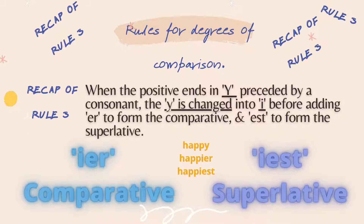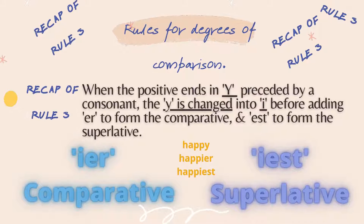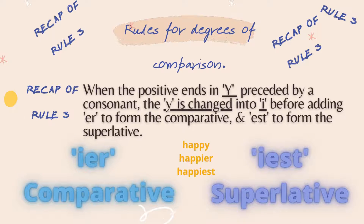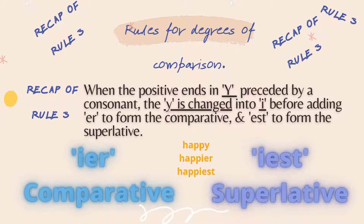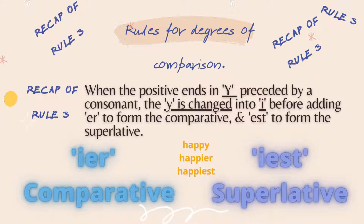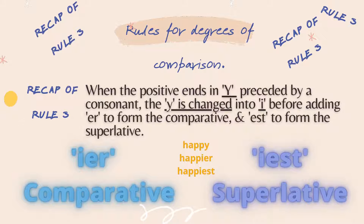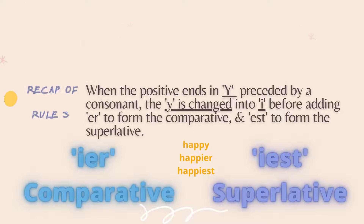Rule number 3: when the positive word ends with 'y' — as in 'happy' — you cut out the 'y' and add 'ier' to form the comparative and 'iest' to form the superlative. For example: happy, happier, and happiest.